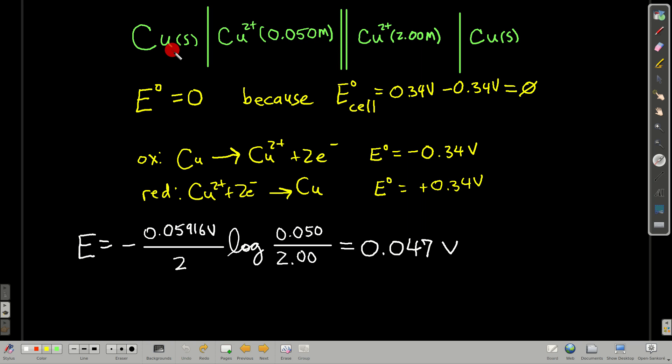So this says there's a strip of copper metal, that's the anode electrode, connected by a wire to another strip of copper metal in the cathode. And in the anode, in the cell here, in the beaker, there is a solution of copper ions and it's at a concentration of 0.050 molar. And over here in the cathode, the electrode is a piece of copper and the solution is a solution of copper two ions, but the difference is that it's two molar.